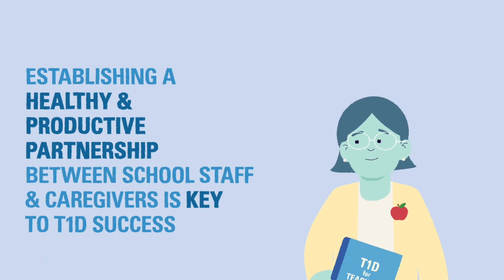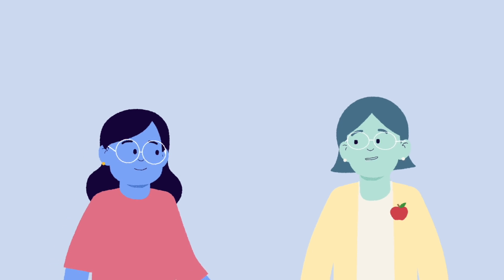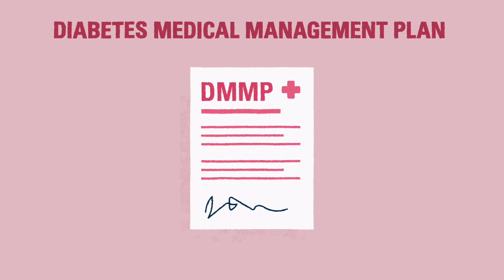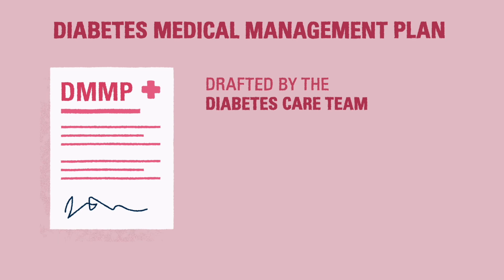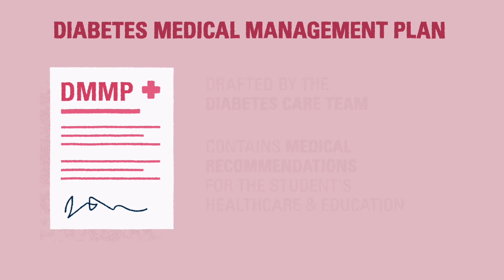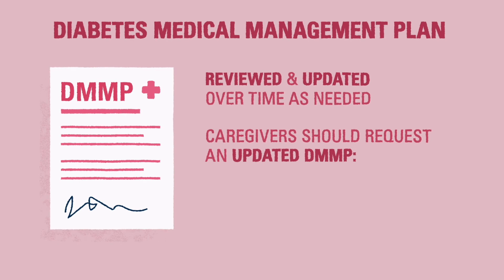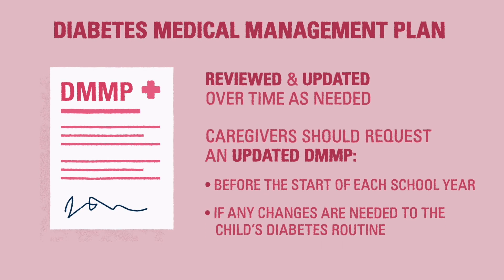Regardless of their age, all children with diabetes will need help at some point to manage the condition, and the school should be prepared to provide that support. Establishing a healthy and productive partnership between the school staff and caregivers is the best way to ensure proper diabetes care. There are several plans that should be developed between the caregivers of the student with diabetes and the school staff with the help of the diabetes care team. The first is called a Diabetes Medical Management Plan, or DMMP, completed by the diabetes care team. It contains the medical recommendations for the student's health care and education plans, and is reviewed and updated over time. Generally, you should request an updated DMMP prior to the start of every school year or if any changes are needed in the student's medical treatment.